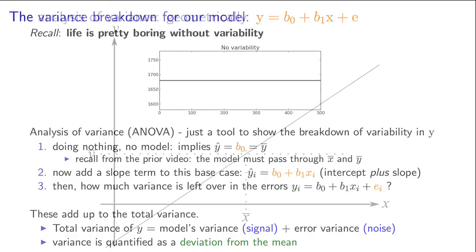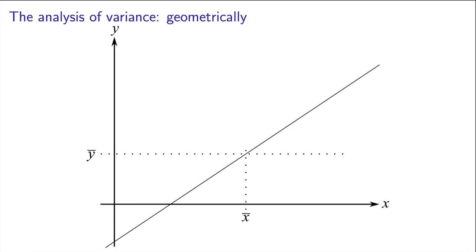So to explain analysis of variance, let's look at this plot. We have a regression line already fitted over here. Notice that as we've said before, the regression line must pass through x-bar and y-bar. We derived that in the prior video.